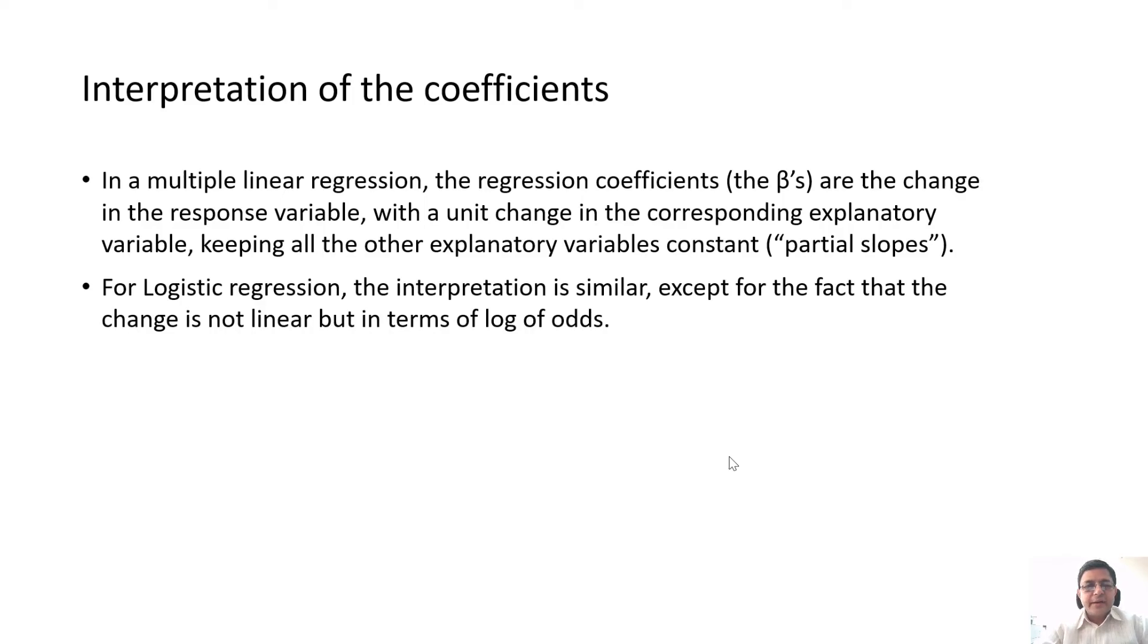In the logistic regression, the interpretation is different. It is similar but different because now we are talking about log of odds. Our response variable is not direct value of y, our response variable is log of odds. It is not linear. How do you interpret the betas in case of logistic regression? We say that one unit change in explanatory variable brings about beta change in the log of odds, not beta change in the value of y because here the value of y is only 0 and 1. We are going to say that one unit change, one jump in CGPA in MBA program from 7 to 8 or 8 to 9 brings about beta change in the log of odds.